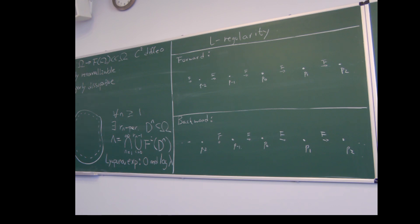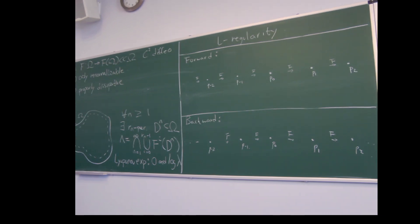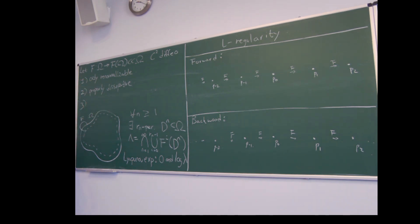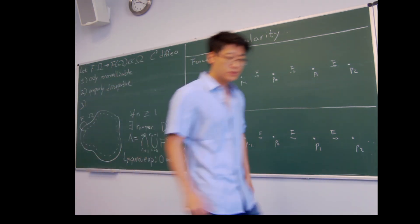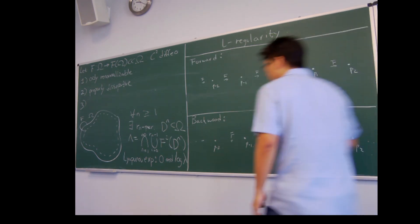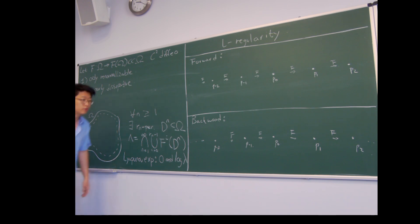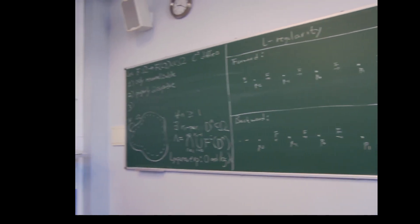We have a Jordan disk on the plane, which maps compactly into itself by this C2 diffeomorphism, capital F, and we're going to assume three things about this function. First, that it's infinitely normalizable, because that's what this lecture series is about. So what does this mean? If it's infinitely normalizable, that means it has an infinite nest of smaller and smaller periodic subdomains, which goes around the phase space. Let me draw maybe two such domains to illustrate.